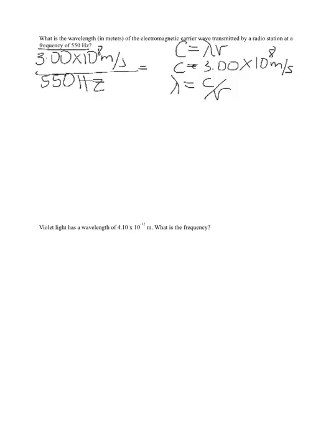When typing this into your calculator, please be sure that you are using the proper key, the exponent key. So 3.00 times 10 to the 8th divided by 550 gives us a wavelength of 5.45 times 10 to the 5th. Now what units is this in?